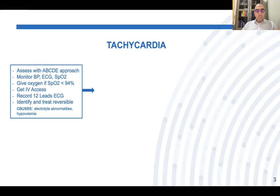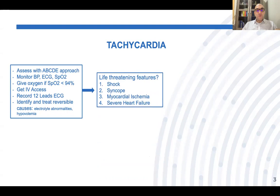While doing the ABCD approach, you have to identify any reversible causes for tachycardia — such as anemia, pain, electrolyte abnormality, or hypovolemia — and treat those reversible causes. The second point is to search for life-threatening features like shock, syncope, myocardial ischemia, and acute heart failure, which must be resulting from the tachycardia itself.